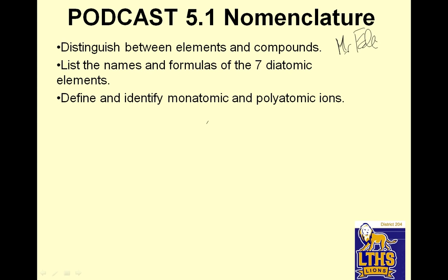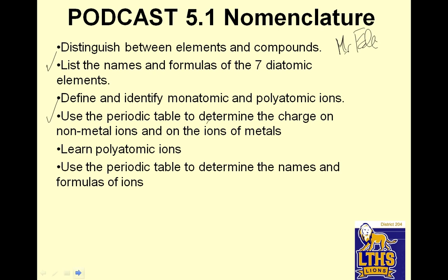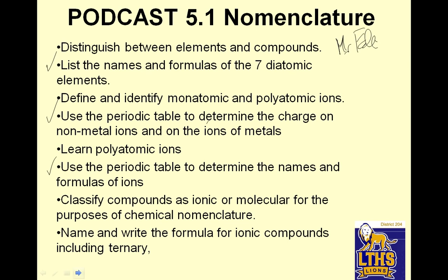Distinguish between elements and compounds, list the names and forms of seven diatomic elements, define and identify monatomic and polyatomic ions, use the periodic table to determine the charge. And learn polyatomic ions — you got those in class today. Use the periodic table to determine the names and forms of ions. Classify compounds. Name and write the formulas for ionic compounds, including ternary. And let's hop to it.